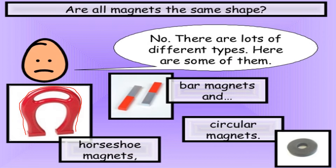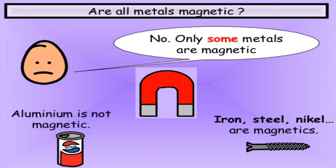This is called a bar magnet, and this is called a circular magnet. We use these types of magnets when we need them. Not all metals are magnets — some metals are magnetic and some are not. For example, aluminum is not a magnetic material. Magnetic materials are those materials which are attracted by the magnet.